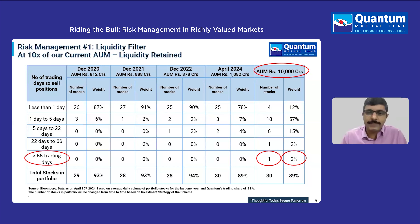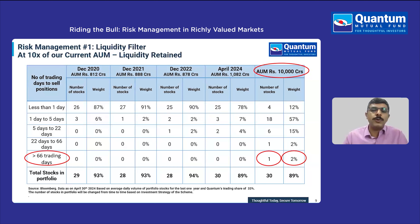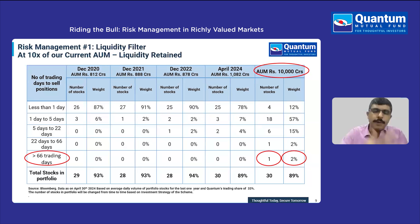That is one primary characteristic of illiquid stocks. If you have an underlying portfolio of reasonable liquidity, you would be able to sell out of those stocks even during stressful times, and at values very close to the traded price or market prices which show up on the exchanges. That is one part of the story.